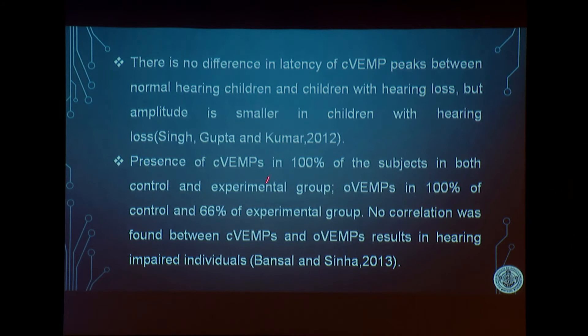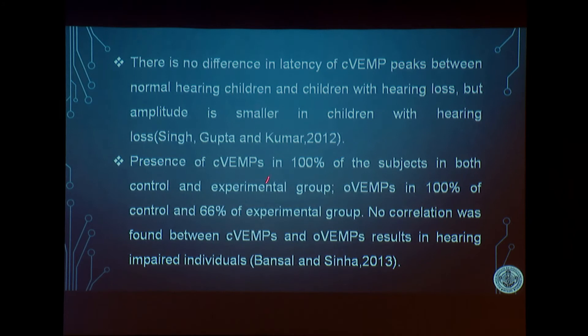Studies from our laboratory found that in children with hearing loss, cVEMP was affected, indicating problems with the saccular structure or the inferior vestibular nerve. We also found that not only cVEMP but also oVEMP was affected in cases with congenital hearing loss.